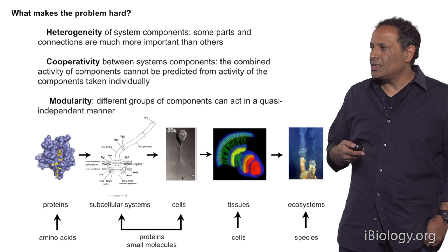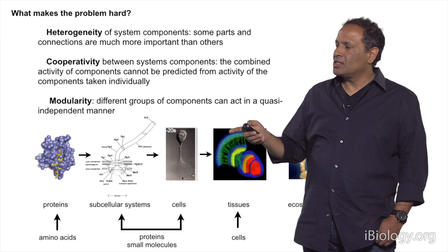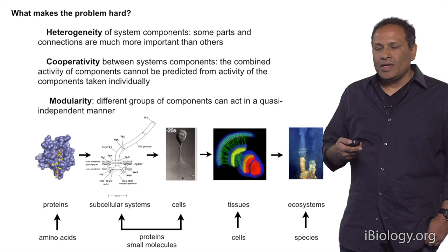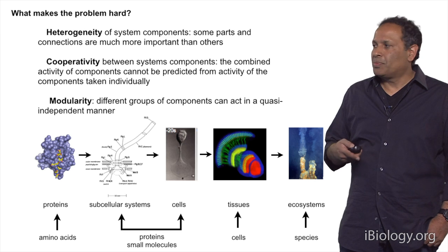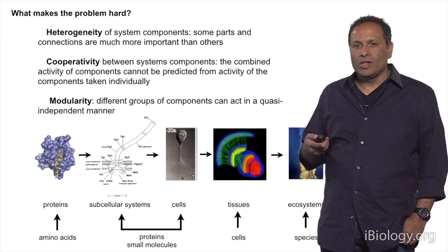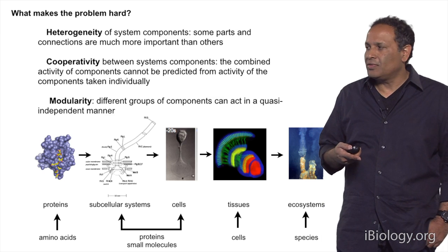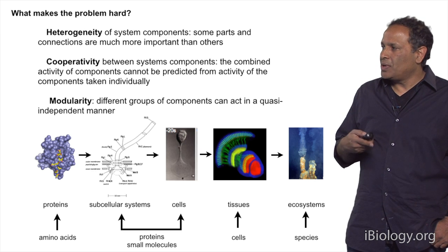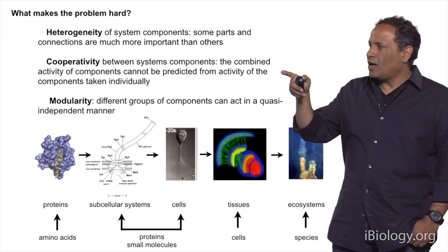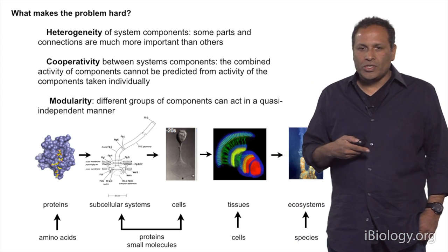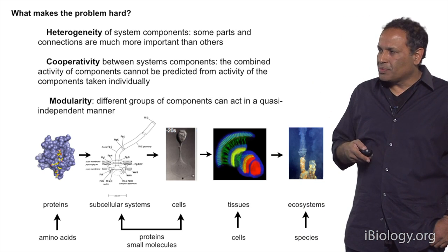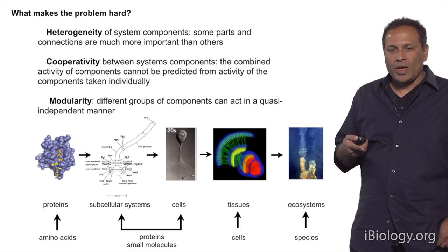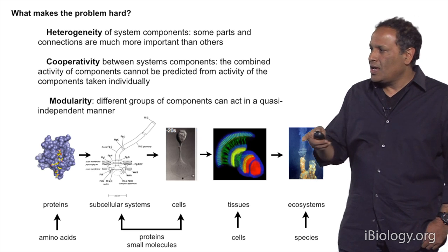The importance of the parts is heterogeneous, and often it's not obvious which parts are important and which are less important. The second problem is that of cooperativity — the systems are made up of parts, but the whole cannot be predicted from the activity of the components taken individually. You could refer to this as non-linearities in the system, so that the overall behavior is not an obvious decomposition into the activity of the parts individually. The third problem is modularity, where different groups of components can be grouped in quasi-independent ways to provide different aspects of function.